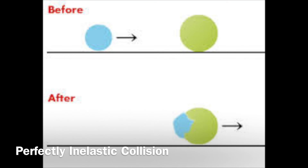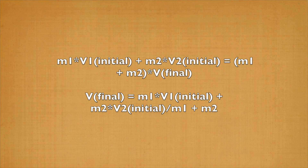Situations in which objects collide and stick together is called a perfectly inelastic collision, and here is the equation used in that situation. Solving for the velocity of the final object leads to this.